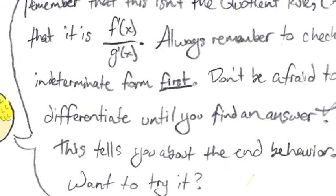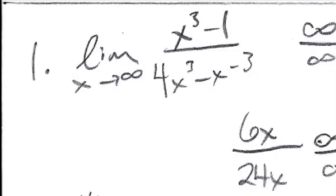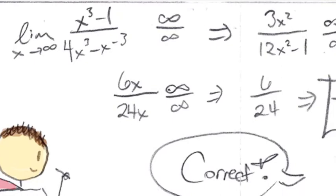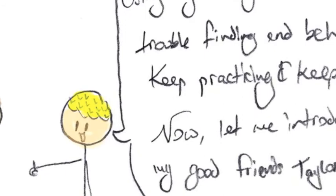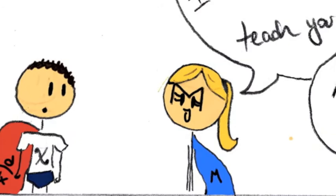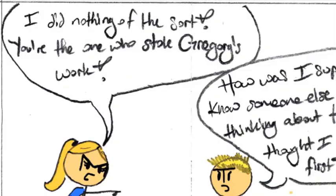One third. Correct! Using my rule, you don't have to have any trouble finding end behaviors. Keep practicing and keep up the good work. Now, let me introduce you to my good friends, Taylor and McLaren. Hello, math man. I'm McLaren. Let me teach you about... My series! You stole my work! I did nothing of the sort! You are the one who stole Gregor's work! How was I supposed to know someone else was already thinking about that? I thought I was the first.